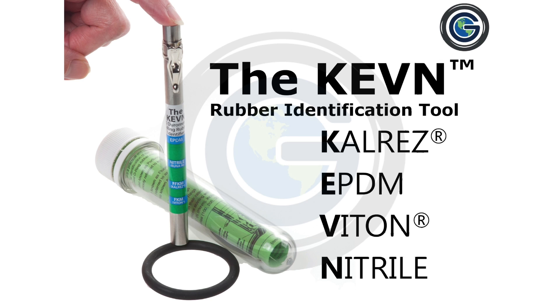The Kevin is a useful tool to identify the material of an O-ring. This video demonstrates how to use the Kevin.